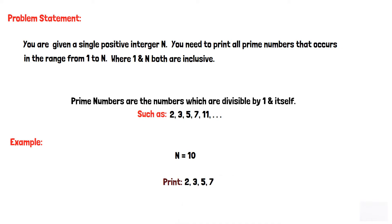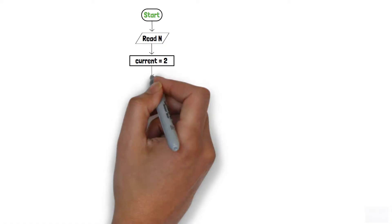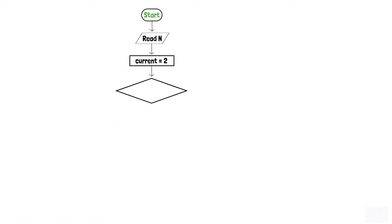Let's begin to construct the flowchart. Initially, let's create a starting terminator to indicate the beginning of the program. Next, accept an integer from the user and store it in variable n using an input component, where n indicates the user-provided upper limit. We will then create a new variable named current and assign it the value 2, since 2 is the smallest prime number. A decision box is then implemented to check whether current is less than or equal to n or not.